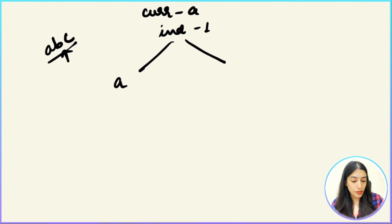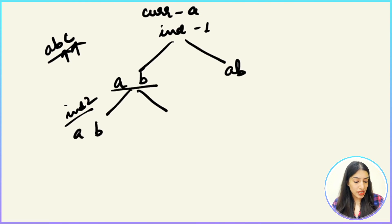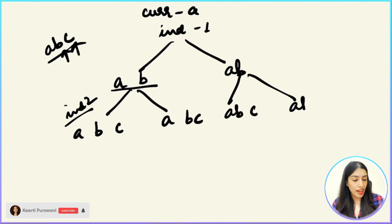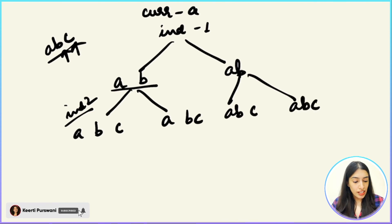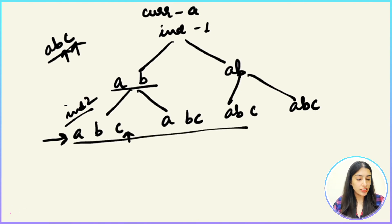At index one (we're at 'b'), we had two options: push 'a space b' or just 'ab', then move to index two. At index two, for each of those cases, again there are two options: add a space then 'c', or just 'c'. So for each branch there are two more options. Once we've reached n, that is the full string, we return and add it to our result 'res'.